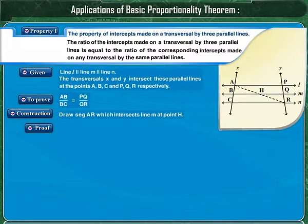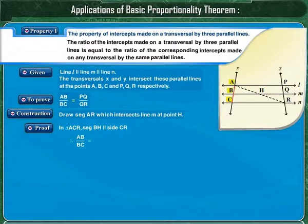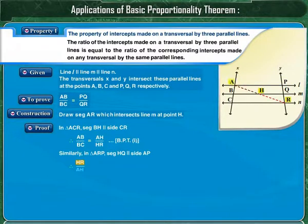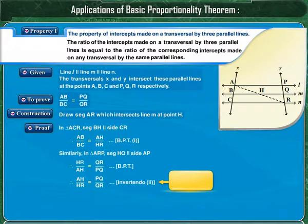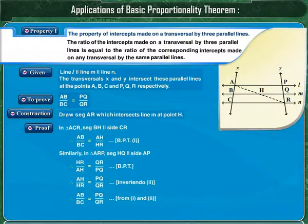In triangle ACR, segment BH is parallel to side CR. Therefore, by the basic proportionality theorem, AB upon BC is equal to AH upon HR. Similarly, in triangle ARP, segment HQ is parallel to side AP. Therefore, HR upon AH is equal to QR upon PQ by BPT. By invertendo, AH upon HR is equal to PQ upon QR. Since AB upon BC equals AH upon HR, we get AB upon BC is equal to PQ upon QR. Thus, the property of intercepts made by three parallel lines is proved.